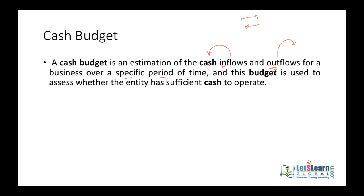Cash outflows include all operating expenses such as rent, salaries, printing, stationery, and advertisement. They also include cash purchases of inventory, payment for prior-month credit purchases, payment of dividends to shareholders, payment of interest and commissions, purchase of assets and investments, repayment of loans, and sometimes buyback of treasury stock.